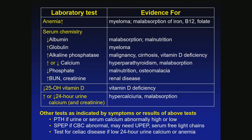If alkaline phosphatase is up, consider malignancy, cirrhosis, or vitamin D deficiency. Calcium up or down points to malabsorption or hyperparathyroidism. If phosphate is down, think malnutrition or osteomalacia. We now have a new drug to treat rare X-linked hypophosphatemia — a biologic that has been around about a year, mainly treating children but now some adults.